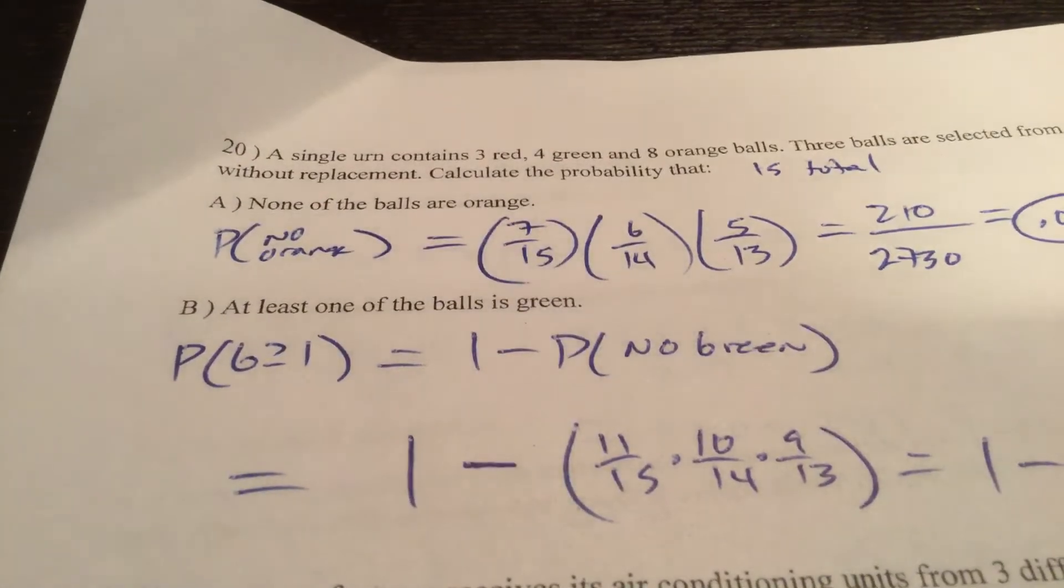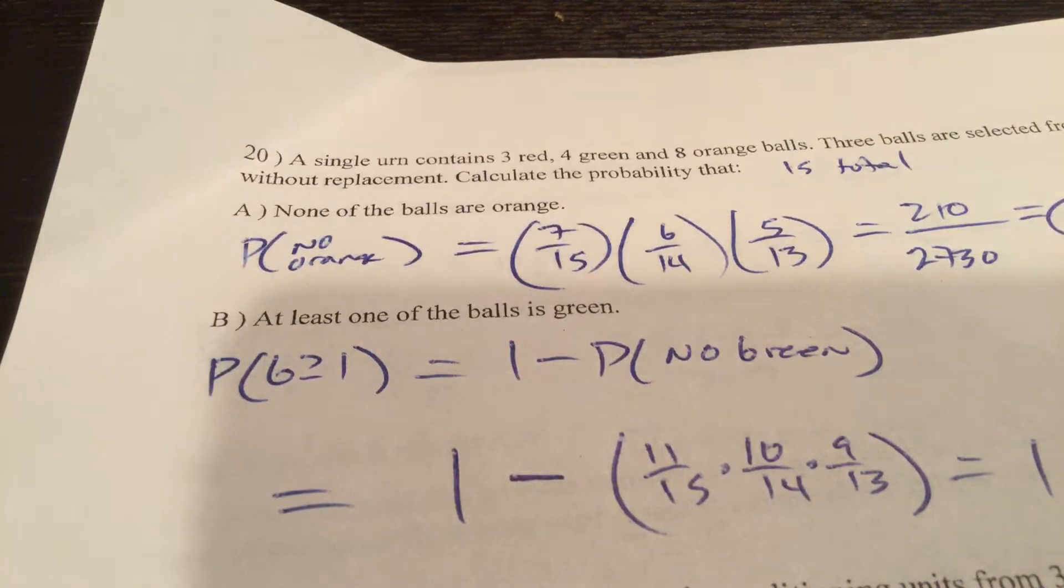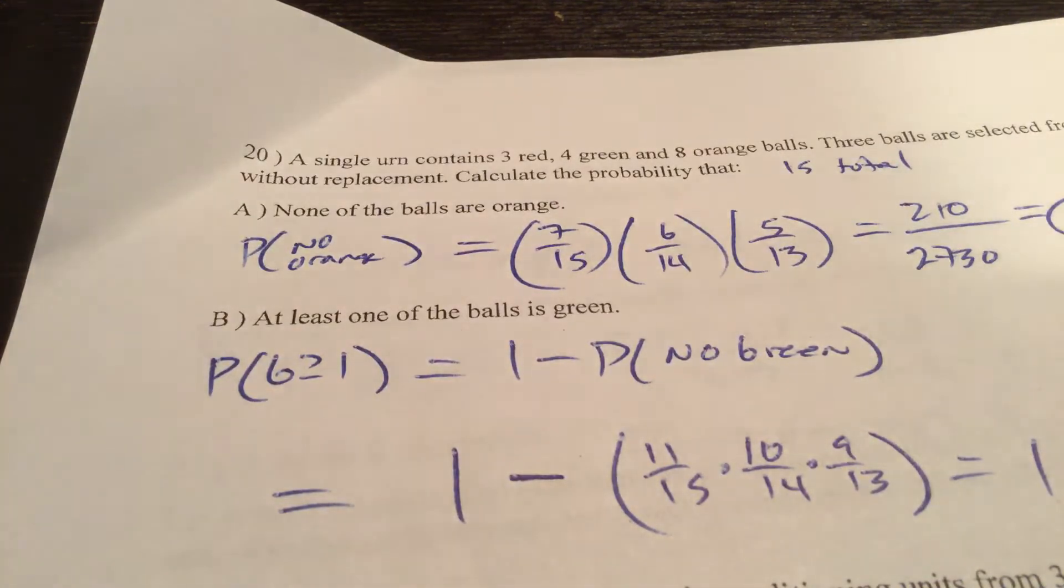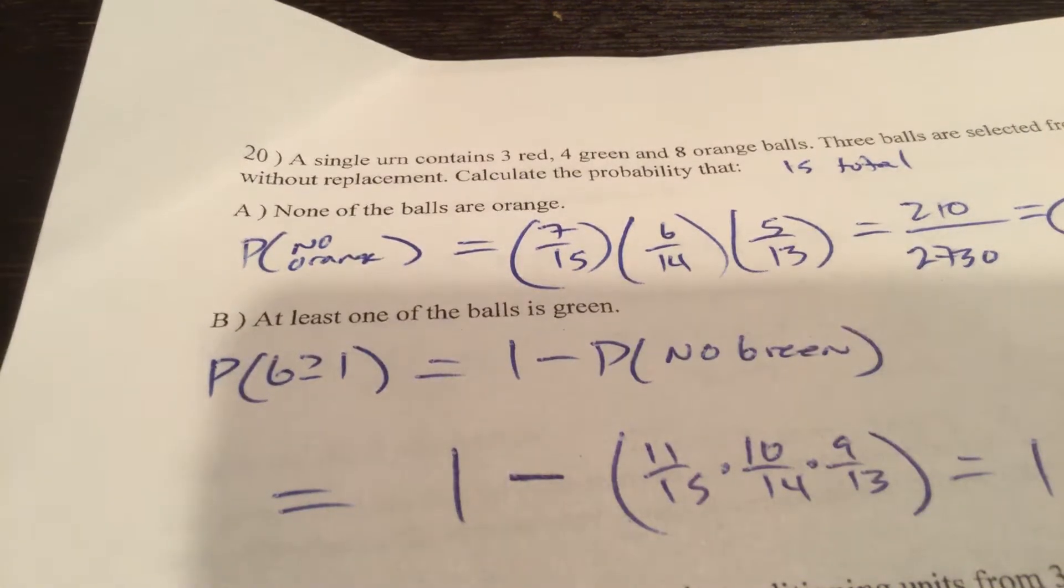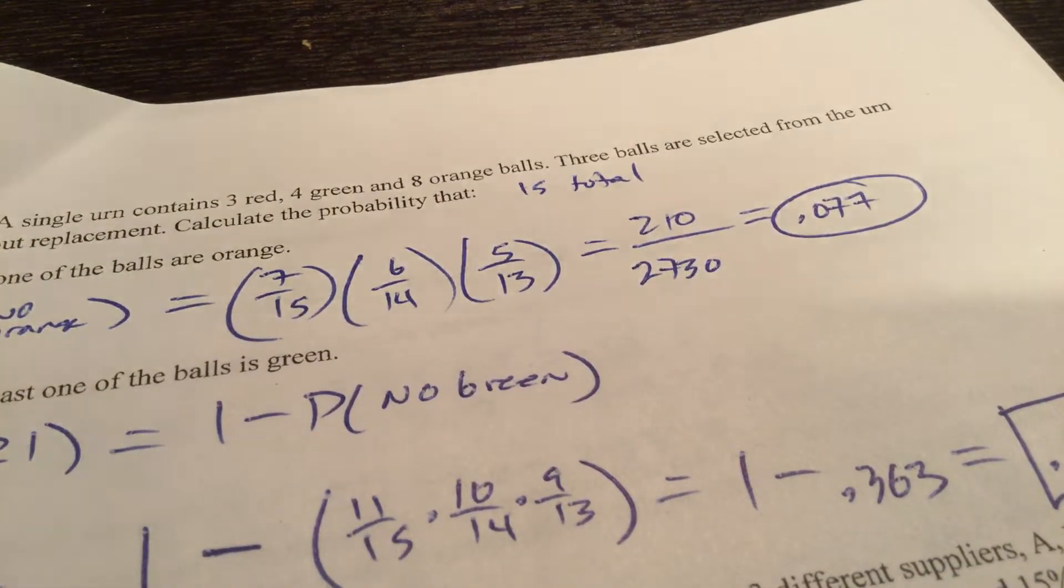The urn question. Okay, so there's 15 total balls. What's the probability that none of them are orange? So 7 out of the 15 are not orange. Then 6 out of the 14 aren't orange. Then 5 of the 13 aren't orange. Multiply the numerators together. Multiply the denominators together. There's your probability.